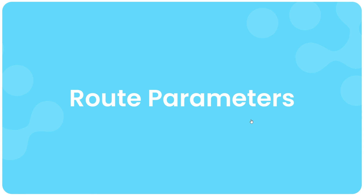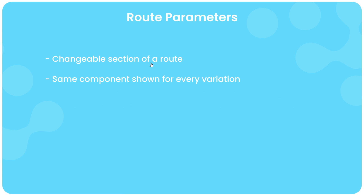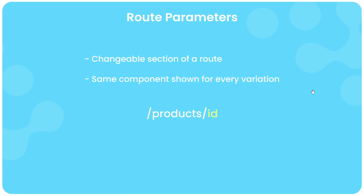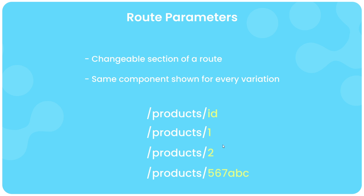In this lesson we're going to talk about something called route parameters. Route parameters are a changeable part of a route where the same page component is shown for each variation. For example, we might have a product details page with a route path of forward slash product then forward slash some id, where the id part is changeable — it could be one, two, three, or something like abc567.